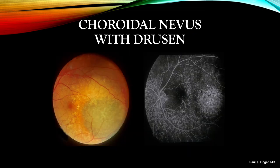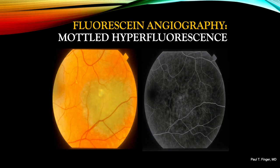Hard drusen are not considered to suggest malignancy. They are often seen on a tumor's surface, but also, as in this case, on the surrounding retina. Hard drusen are considered to be a byproduct of retinal metabolism. Fluorescein angiography of a choroidal nevus is likely to show a pattern of mottled hyperfluorescence. This pattern suggests that the nevus is causing a disturbance of the overlying retinal pigment epithelium, changing its ability to block fluorescence. Consider that choroidal nevi can be located in different positions within the choroid, thus affecting the amount and change of overlying tissues.